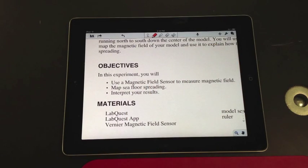And for this experiment, your objectives are such that you're going to use a magnetic field sensor to measure the magnetic field, you're going to map the seafloor, and you're going to interpret the results from your data.